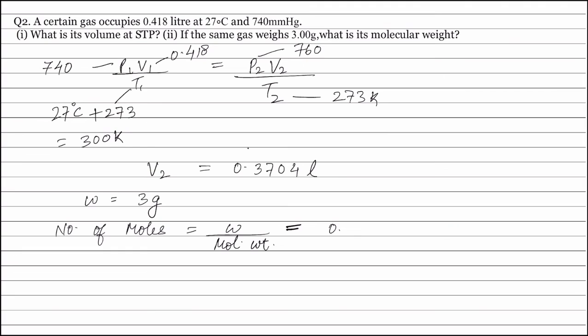The volume of the gas is 0.3704 litres divided by molar volume that is 22.4 litres. Now, weight of the gas is given as 3 grams. Therefore, substituting the value for the weight of the gas in this equation, we can find the molecular weight of the gas which is equal to 181.4.